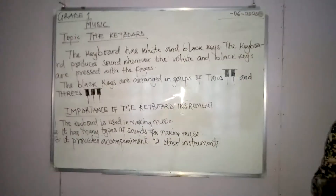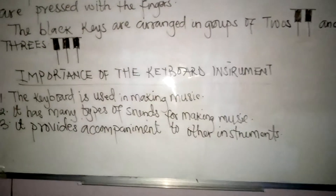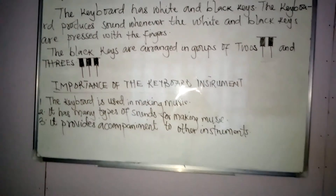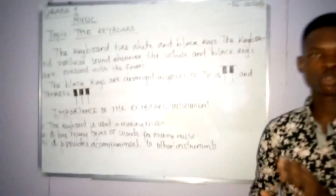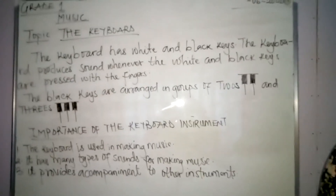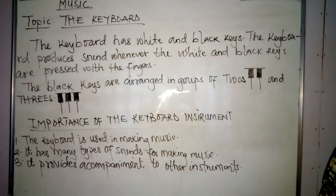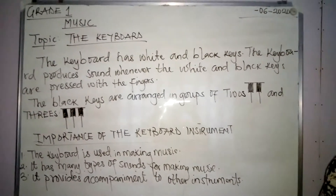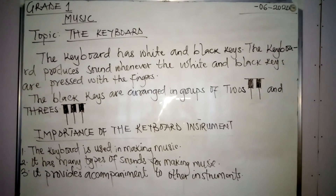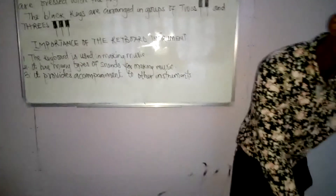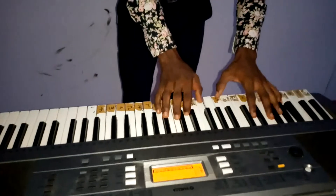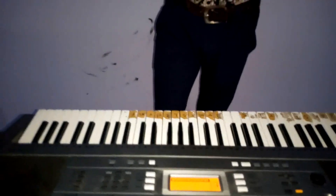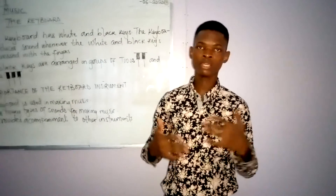Number three: the keyboard provides accompaniment to other instruments. It provides a kind of harmonic support. It supports other instruments when they are making performances. The instrument could be the violin, the saxophone, the trumpet. Even your voice is an instrument. Assuming you want to accompany a singer — let's say someone is singing the national anthem — the keyboard can be used to accompany the person. You can use the keyboard to accompany any kind of music with any kind of instrument.